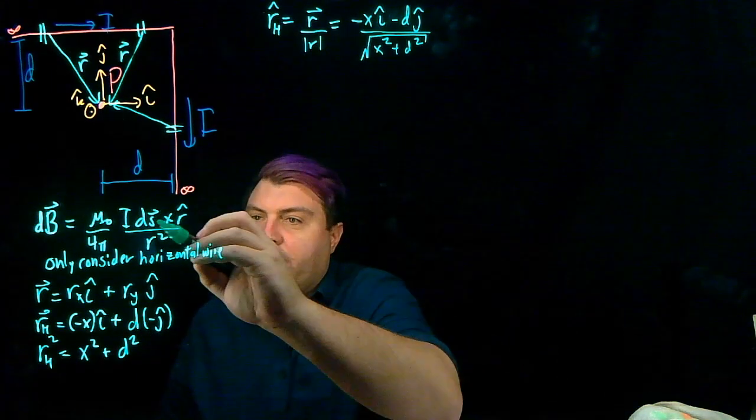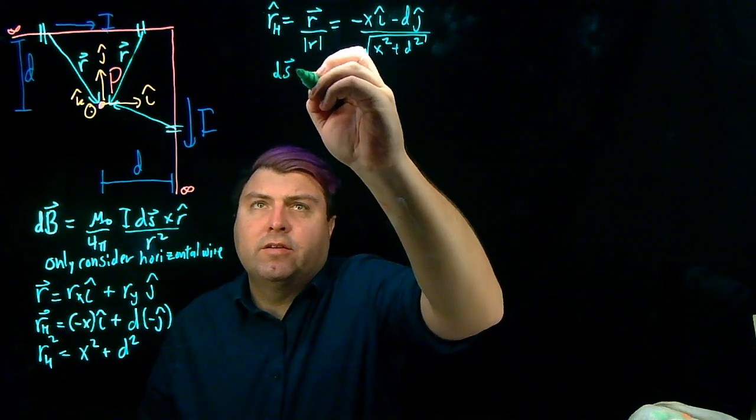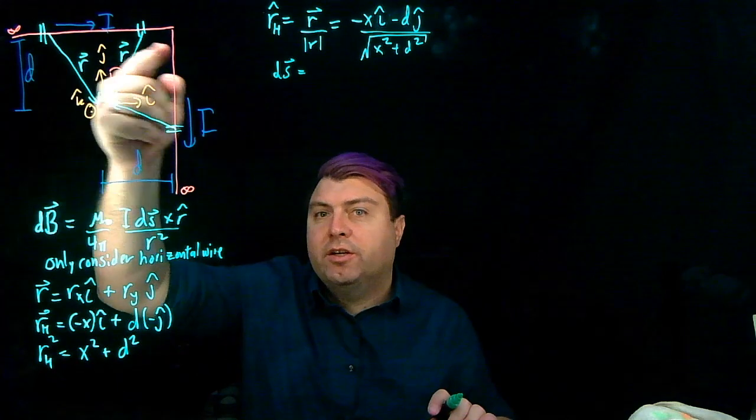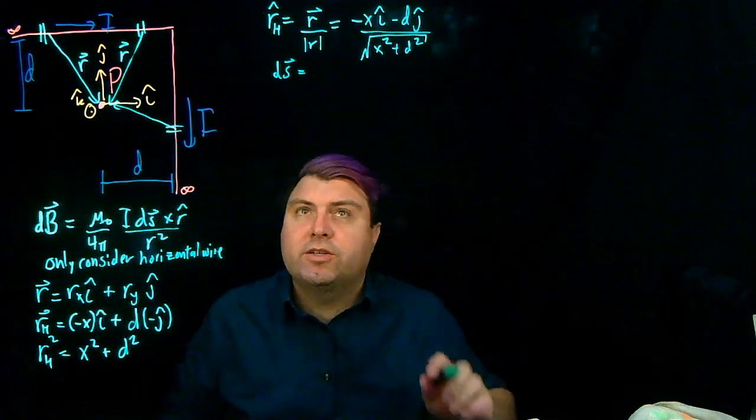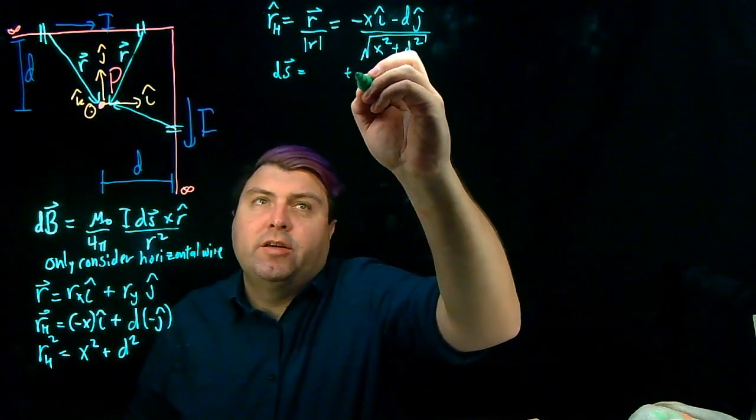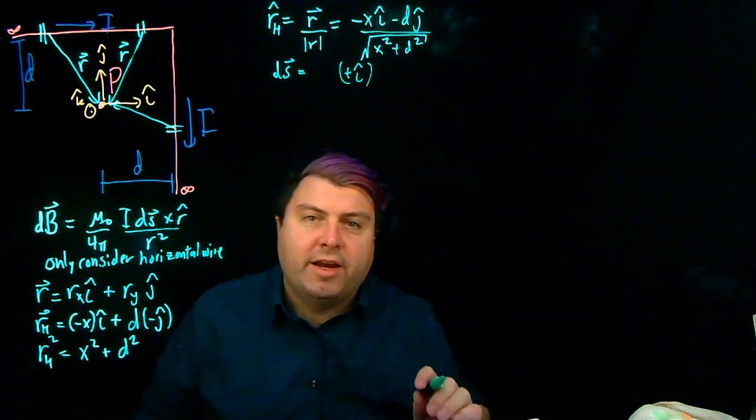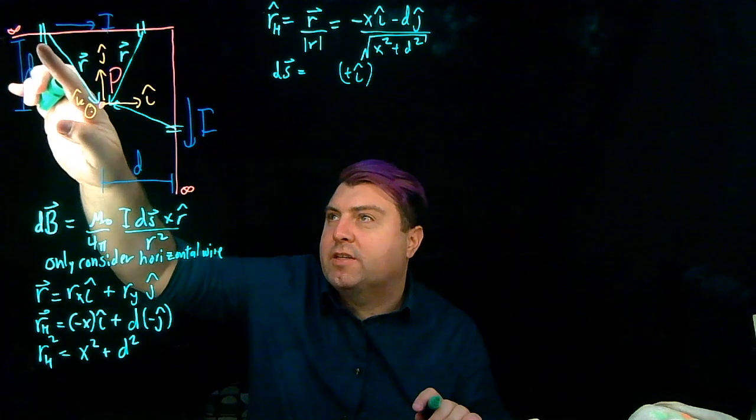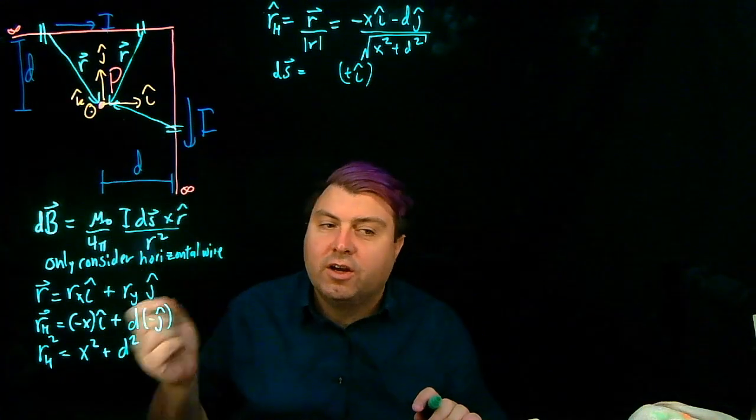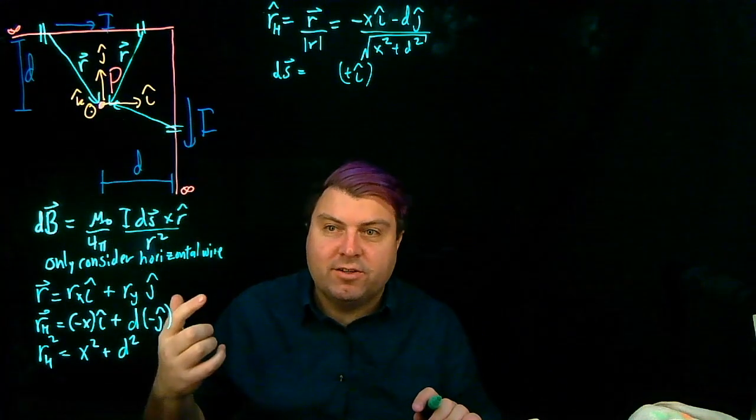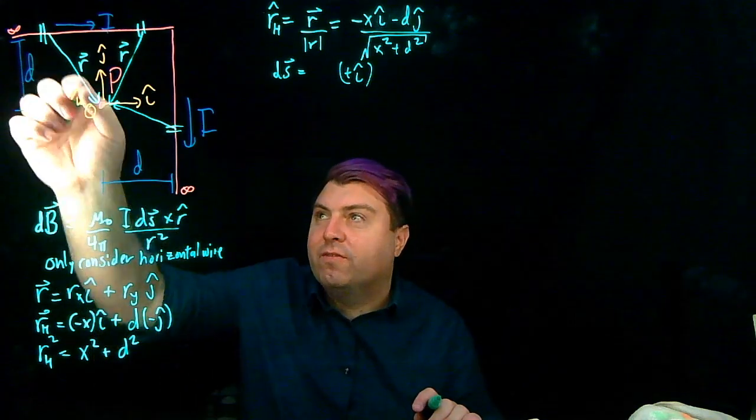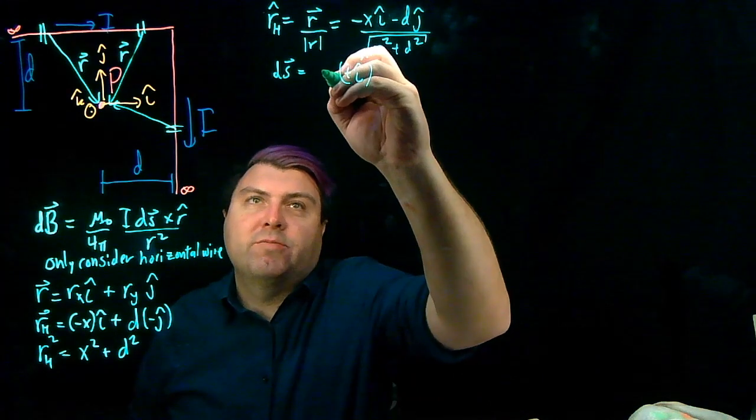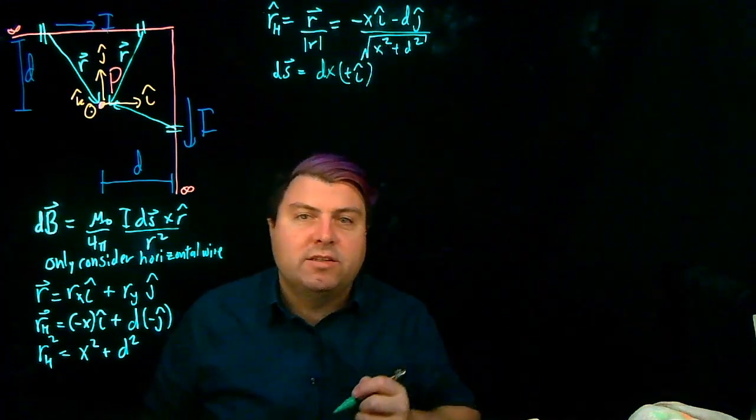So now I have r squared, now I have r hat. I have to figure out still what ds vector is. So my ds vector is which direction the current is going for this horizontal section. So it's going in the positive i hat direction. And then what we need to figure for the ds is when I go from this side to this side of these little slices, what have I moved? And nicely enough, I am moving a tiny amount of x so I can express that tiny amount of x as dx.